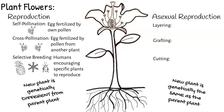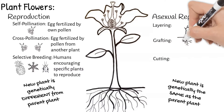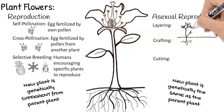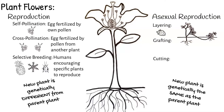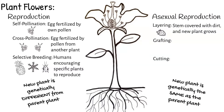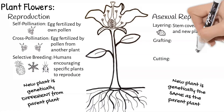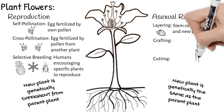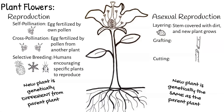Layering is when a stem is bent down and covered with soil; roots then grow and a new plant starts growing from it. A plant that naturally spreads this way is strawberries. Grafting is when a branch from one tree is attached to another and then begins to grow. Fruit trees as well as roses are often grafted.